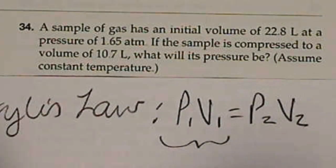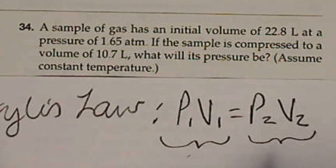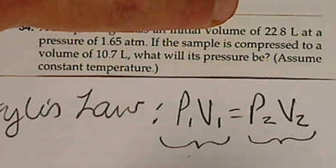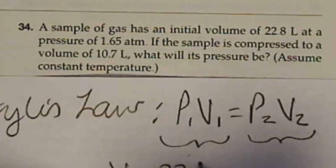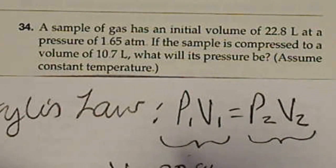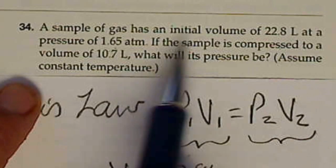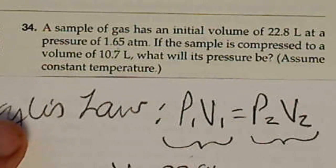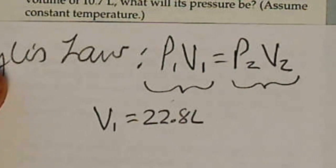And this occurs at one instance and this occurs at the other. So if we start our initial volume, let's say that V1 is 22.8 liters, then P1 has to be that volume at that pressure. So P1 would be 1.65 atmospheres.